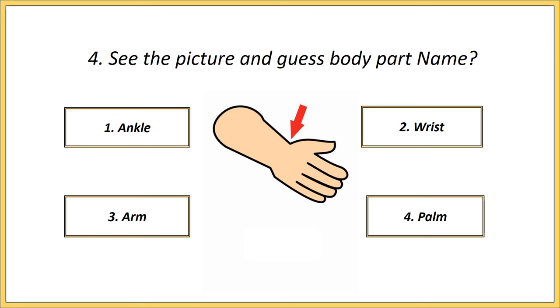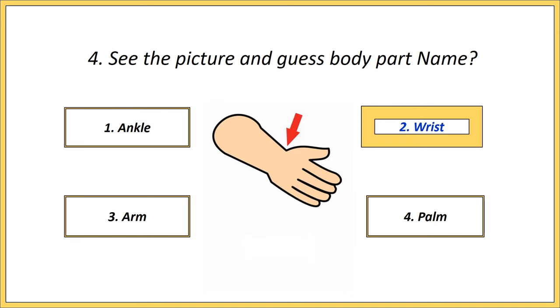Fourth one. See the picture and guess the body part name. Options: ankle, wrist, arm, palm. Answer is wrist.